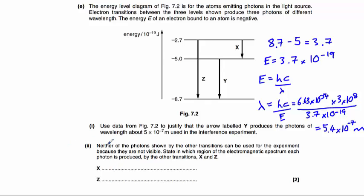And part 2 says that neither of the photons shown by the other transitions can be used for the experiment because they are not visible.